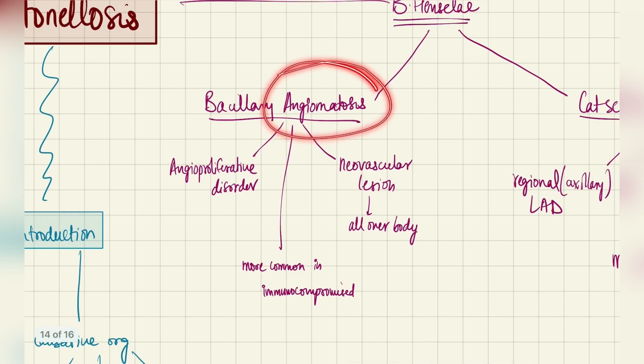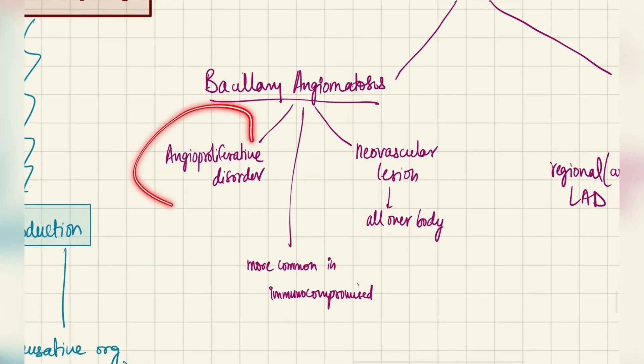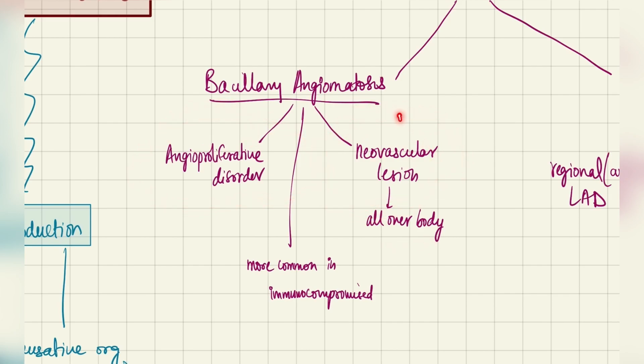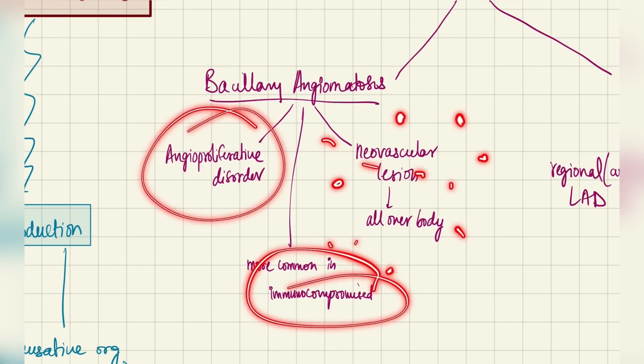Angiomatosis, as the name suggests, you will see angioproliferative disorders, neurovascular lesions all over the body. So there will be these patches and lesions all over the body. Angioproliferative disorders, immunocompromised.